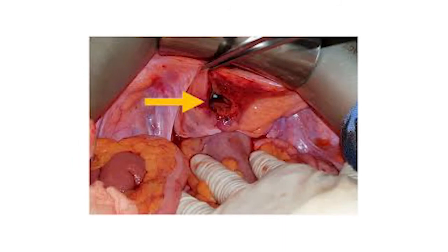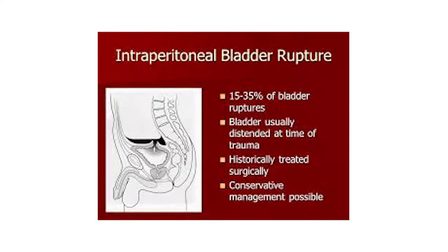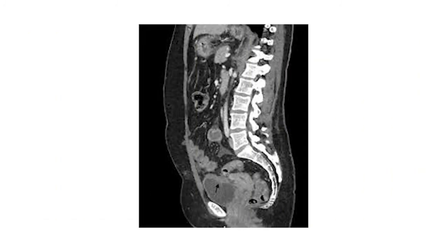Intraperitoneal rupture: the peculiarity of this condition is that after rupture the patient often has no complaint nor feels the desire to pass urine, because all urine passes into the peritoneal cavity. On examination the abdomen is distended; after a few hours there may be rigidity indicating peritonitis. Investigations: if the catheter reveals an empty bladder, a plain X-ray in the erect position may show a ground-glass appearance of the lower abdomen due to urine in the peritoneal cavity. A peritoneal tap may reveal urine. Installation of radio-opaque solution into the bladder confirms diagnosis. Intraperitoneal bladder rupture accounts for 15–35% of bladder ruptures; the bladder is usually distended at the time of trauma and must be treated surgically — conservative management is not possible.